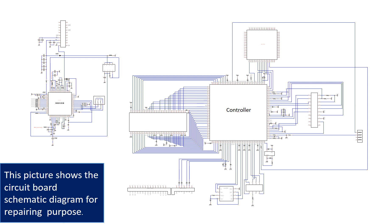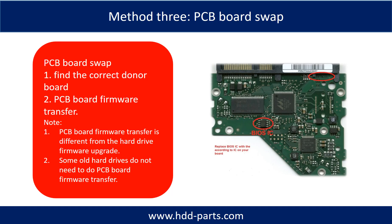This picture shows the PCB board schematic diagram for repairing purposes. Fixing hard drive PCB board method 3: PCB board swap. PCB board swapping includes two steps. One, find the correct donor PCB board. Two, PCB board firmware transfer.